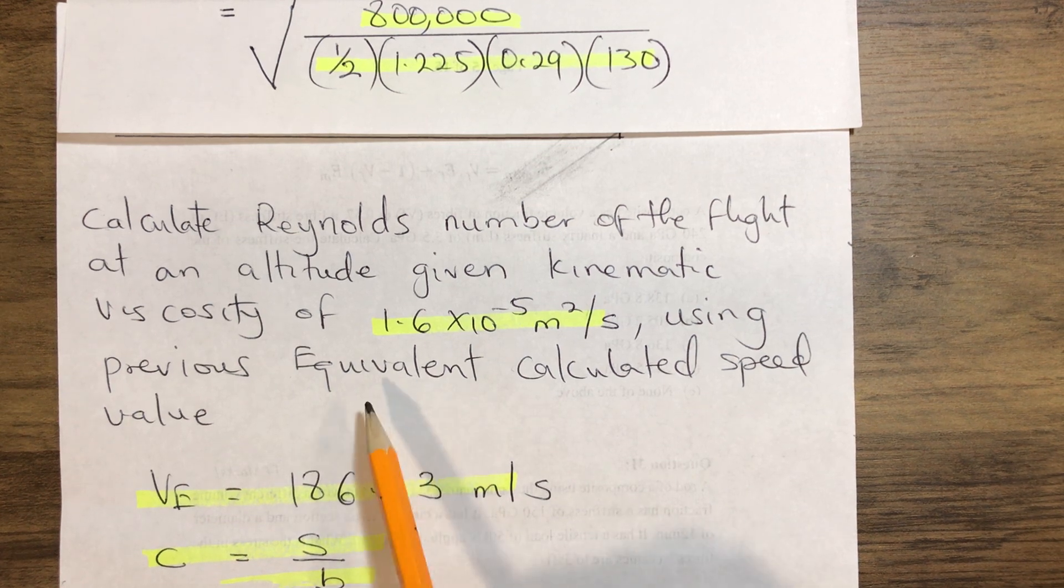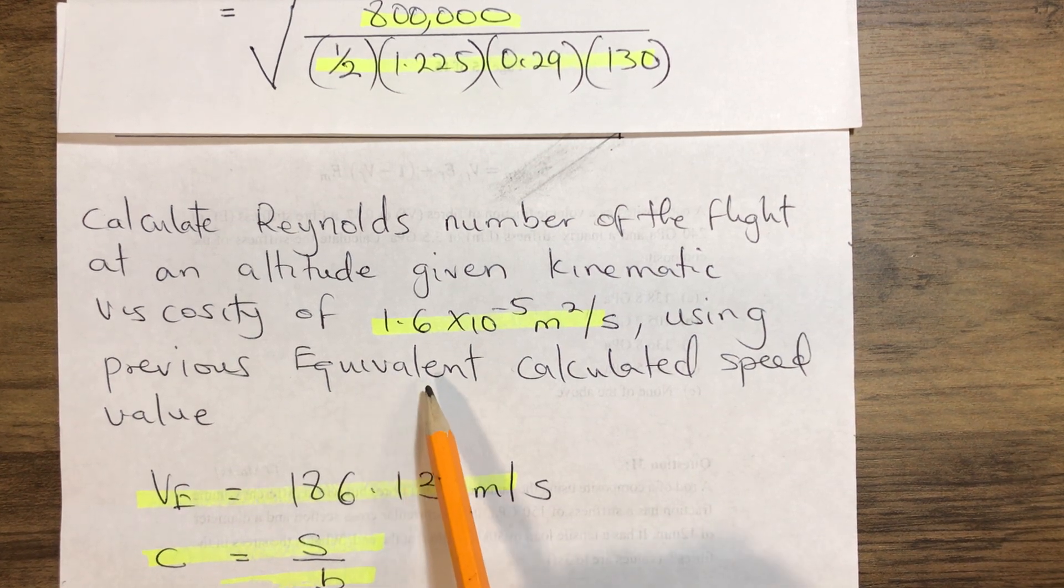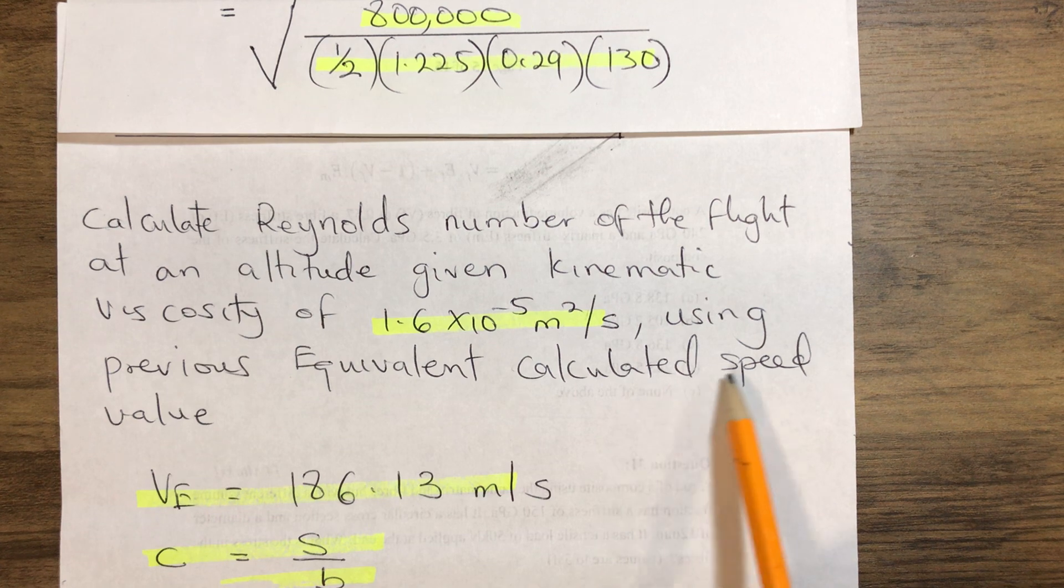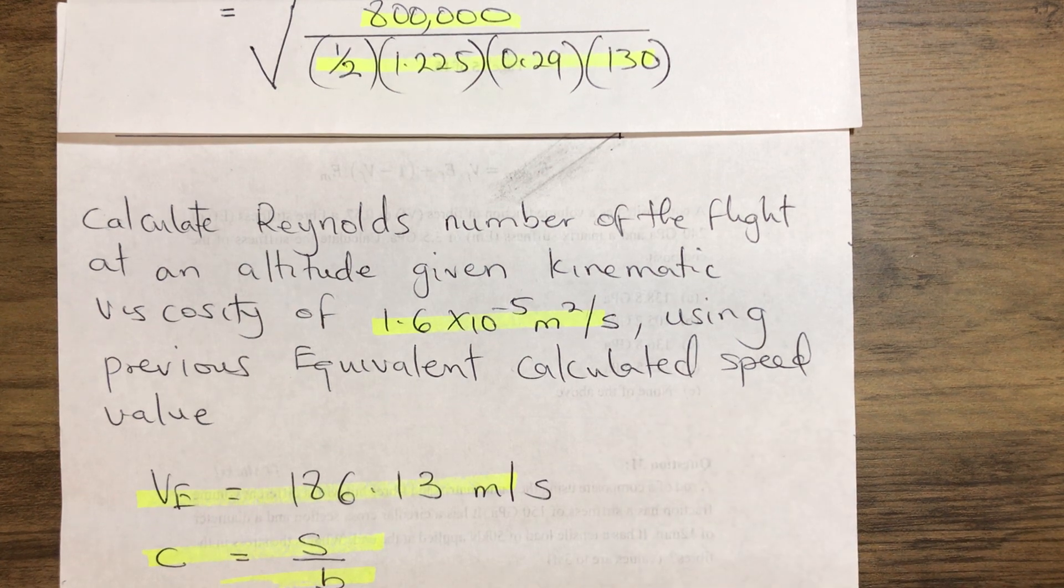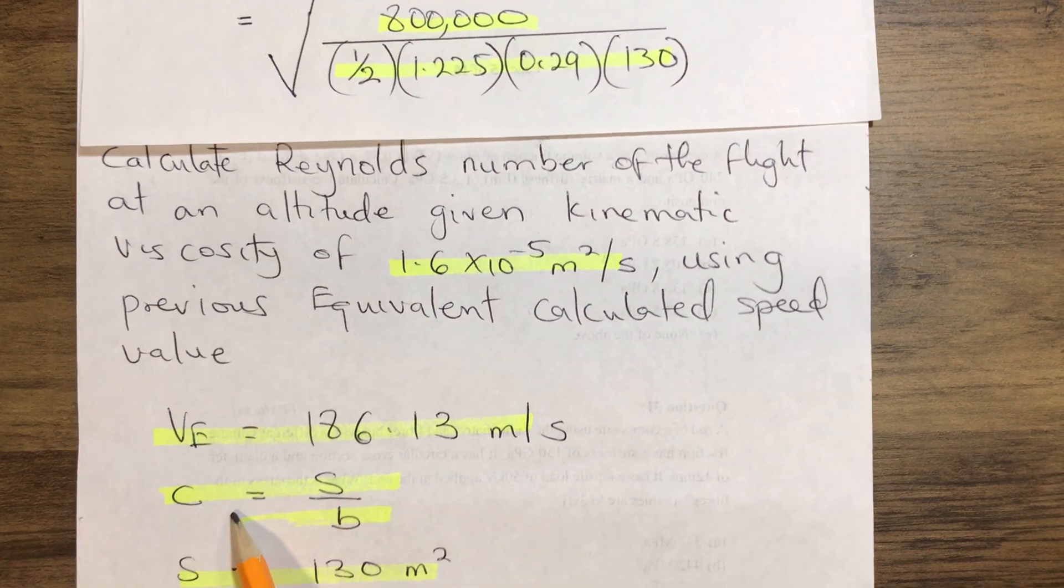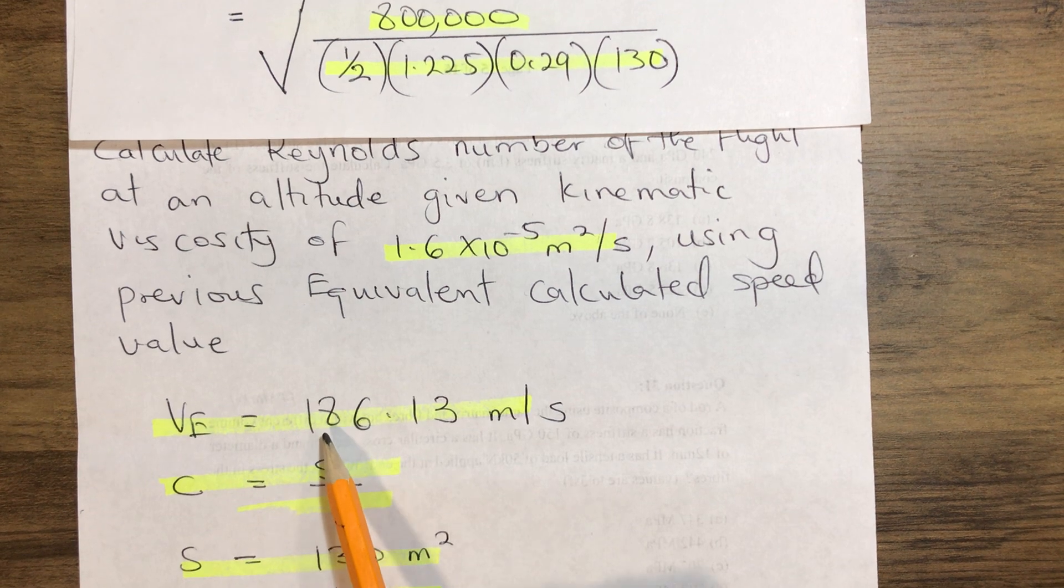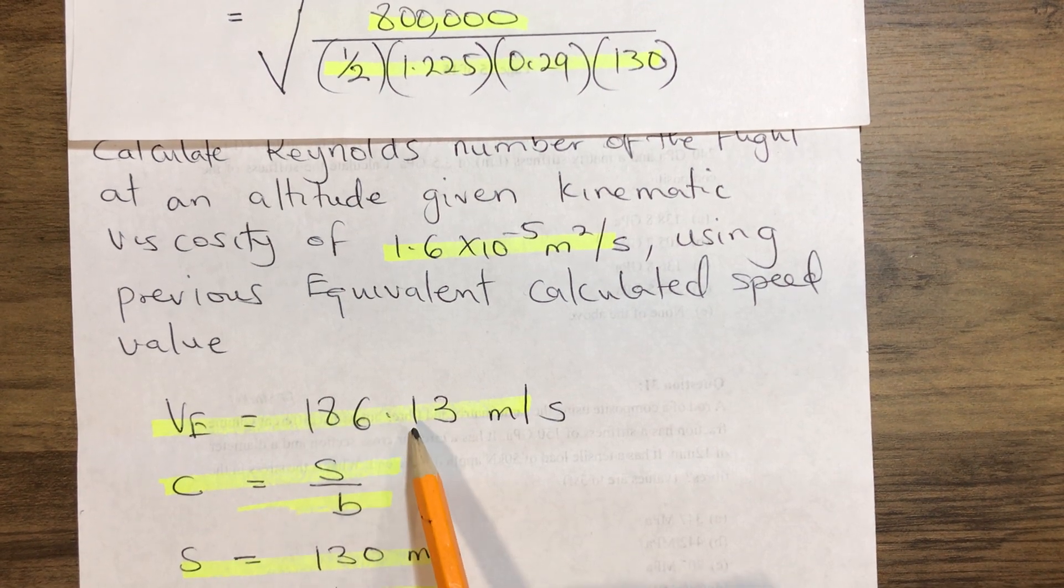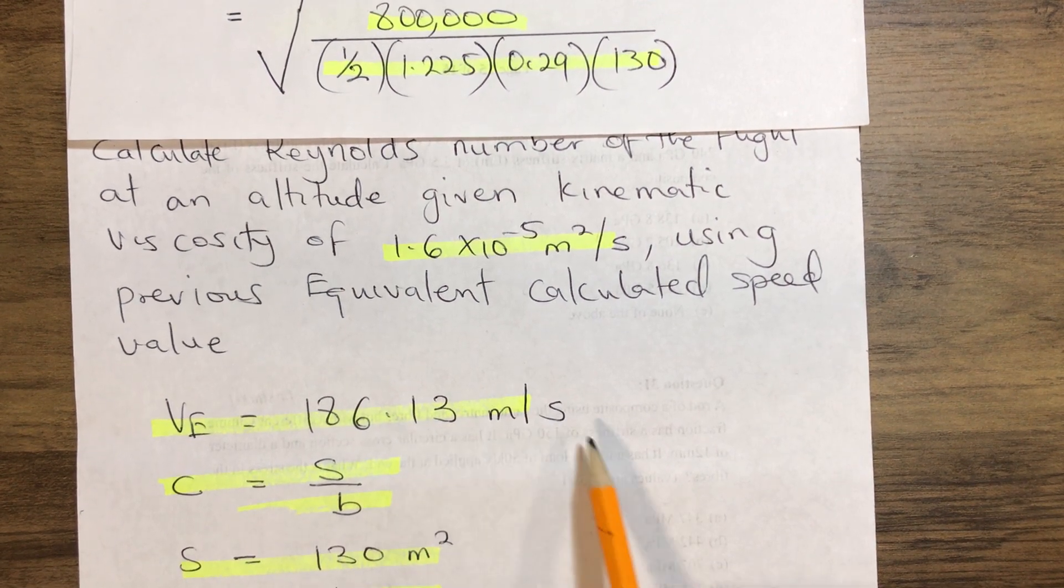We are asked to use the previous calculated aircraft speed. If you watch our previous video, our calculated airspeed VE is 186.13 meters per second.